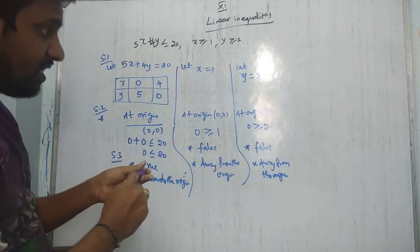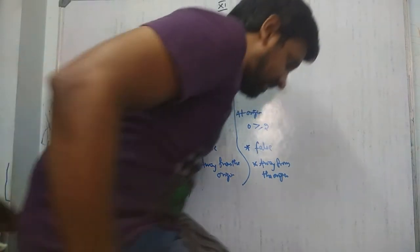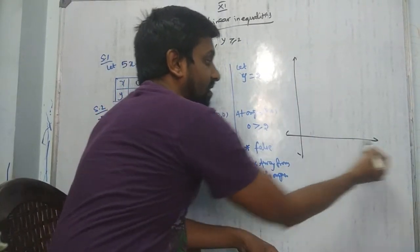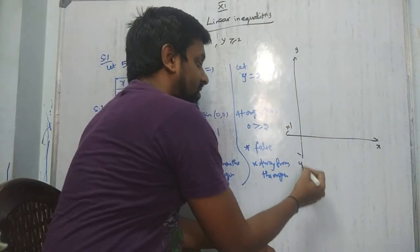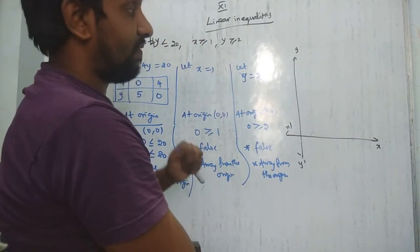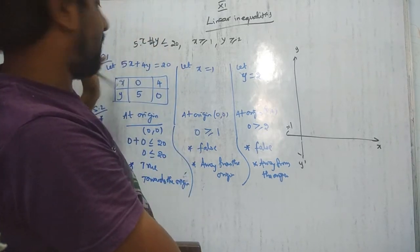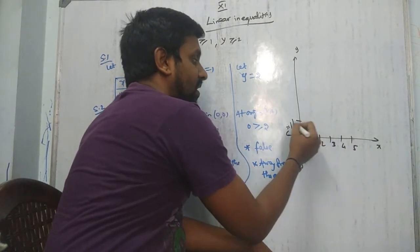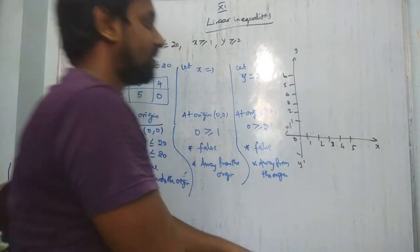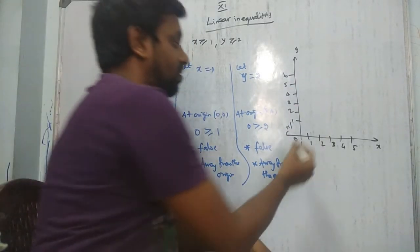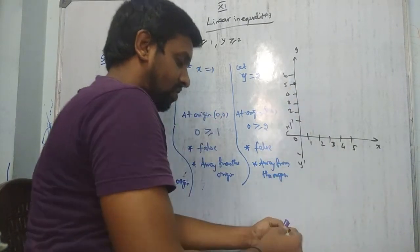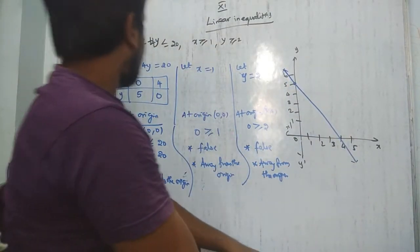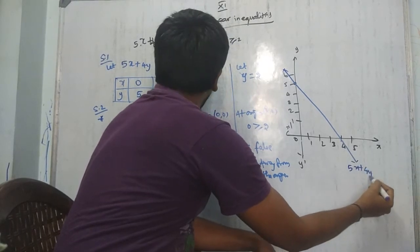Now take a graph sheet and pencil. Draw the x-axis, y-axis, x-dash, and y-dash clearly. Set a scale. Plot the coordinates: for the line 5x + 4y = 20, plot (0, 5) and (4, 0). Take a ruler and draw the line. Label it 5x + 4y = 20.